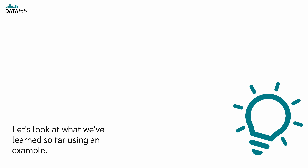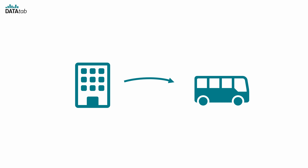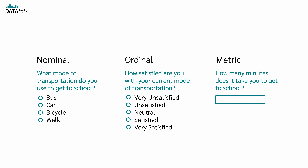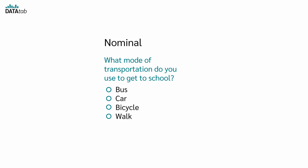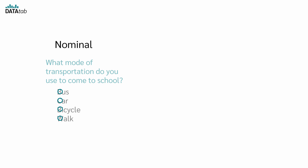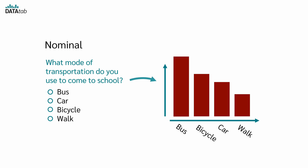Let's look at what we've learned using an example. Imagine you're conducting a survey in a school to understand how pupils get to school. The first question could be: what mode of transportation do you use to get to school? – Bus, car, bicycle, walk. This is a nominal variable. The answers can be categorized but there is no meaningful order. Bus is not higher than bicycle, walk is not higher than car. To analyze these results, you can count how many students use each mode of transportation and present it in a bar chart.